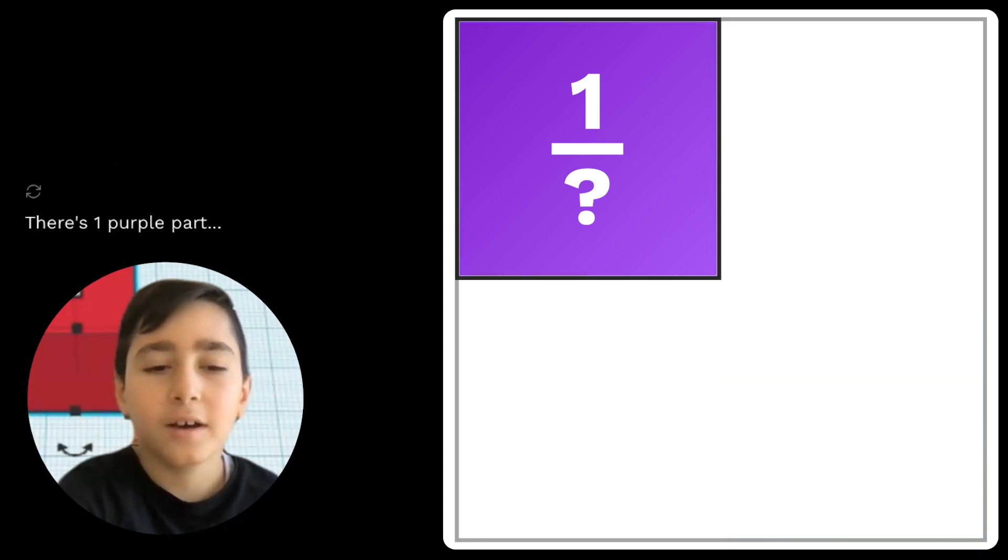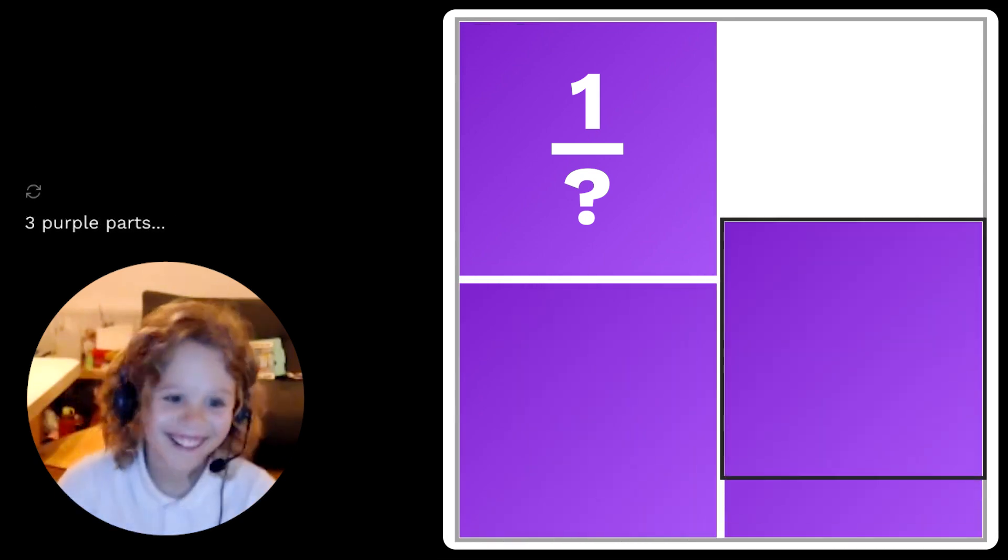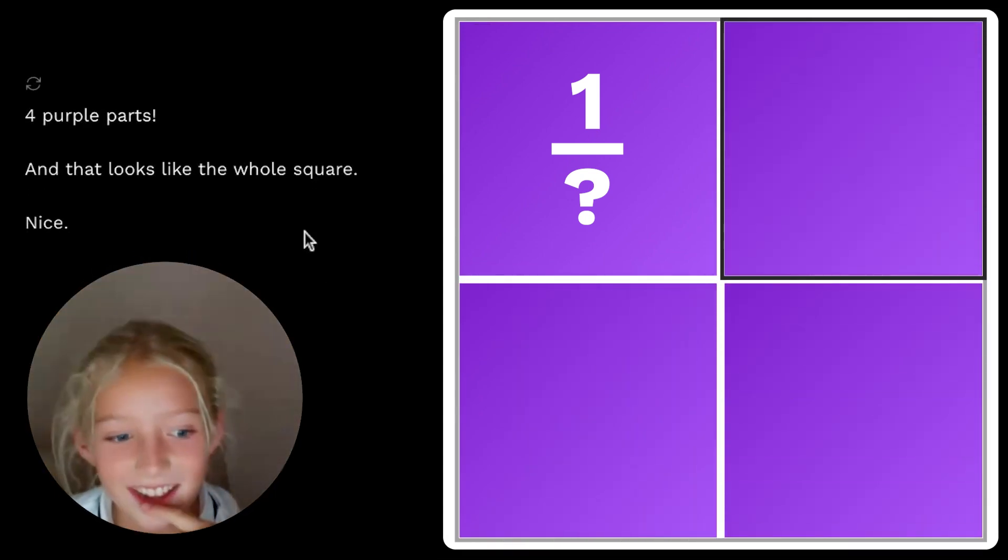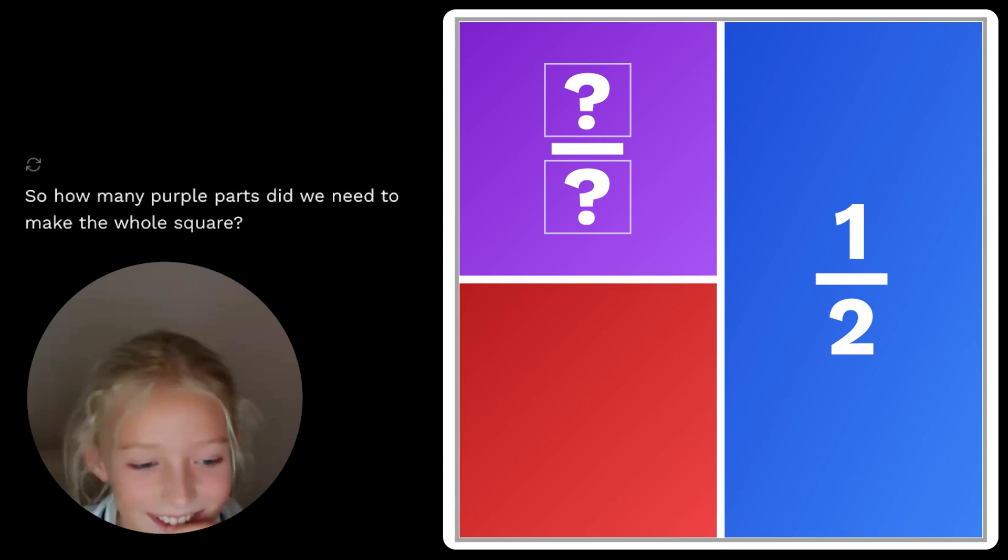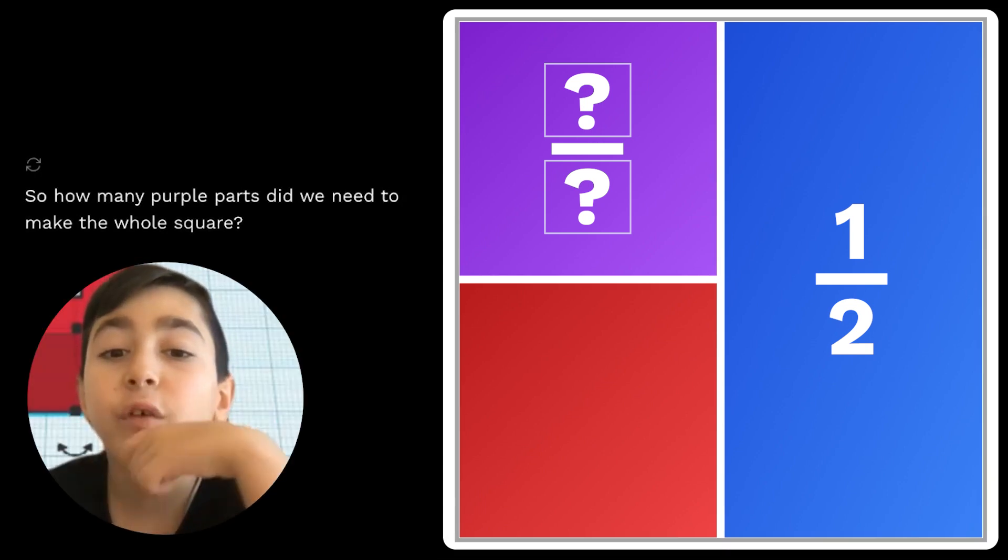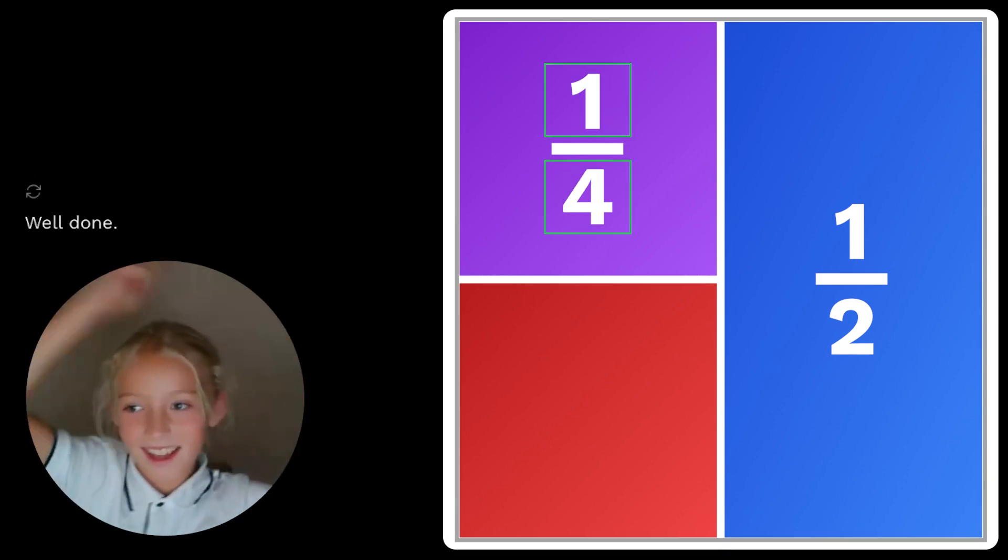There's one purple part. Four purple parts. That's so nice. So how many purple parts did we need to make the whole square? It's a fourth. Well done. Yay.